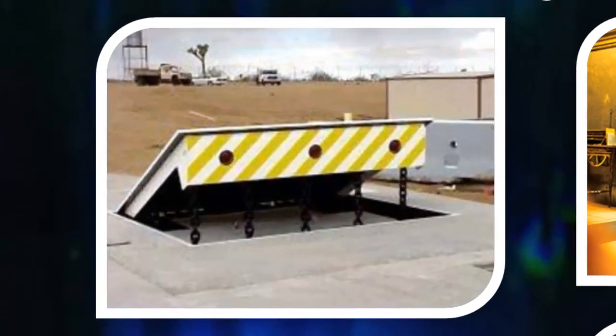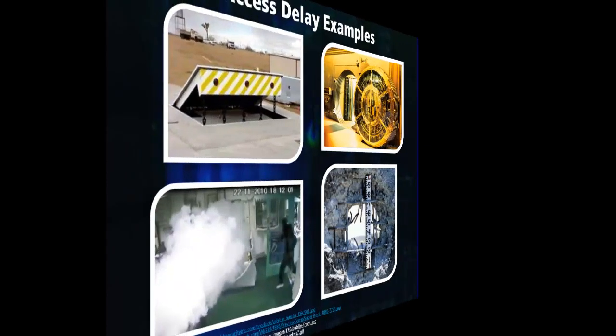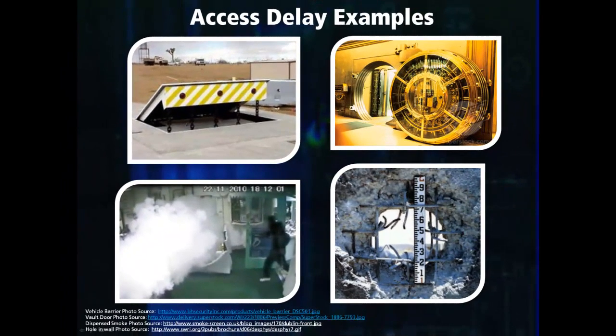The picture on the top left is an example of a retractable vehicle barrier. The barrier can lay flat, allowing vehicles to pass, or can be activated and stop vehicles that are attempting to enter the facility. This serves a significant delay purpose because if the adversary is forced to go on foot rather than by vehicle, it will take them much longer to traverse the same distance.